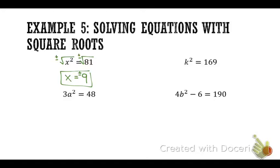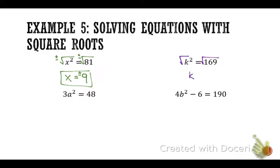For k squared equals 169: take the square root of both sides, and k equals positive-negative 13. Why is it both positive and negative? Because 13 times 13 is 169, and negative 13 times negative 13 is also 169 — when you multiply them by themselves, either gives you the answer.